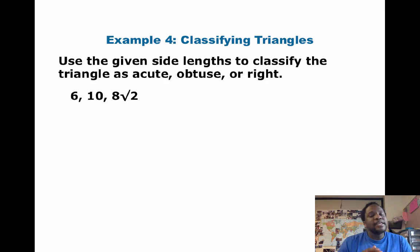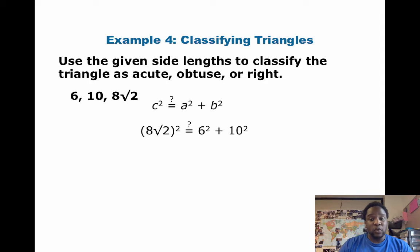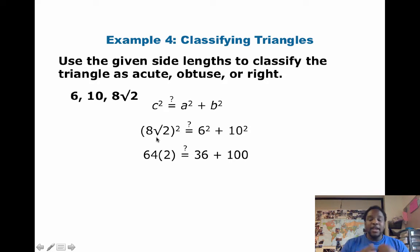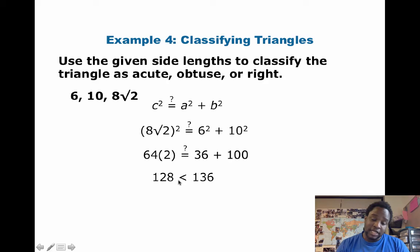Let's do one more. We have 6, 10, and 8 radical 2. So, note that 8 radical 2 is bigger than 10 because radical 2 is, like, somewhere between 1 and 2. And so, when you multiply, like, 1.2 times 8, it ends up being bigger than 10. But let's see if this triangle, but nonetheless, 6 plus 10 is 16, and that's still greater than 8 radical 2. But let's see if it's acute, obtuse, or right. So, we have 8 radical 2 squared equals 6 squared plus 10 squared. So, 8 radical 2 squared is going to be 64 because you're going to multiply 8 times 8 and you're going to multiply radical 2 times radical 2, which is 2. So, 64 times 2. And then we have 36 plus 100. So, 64 times 2 is 128, which is less than 136.